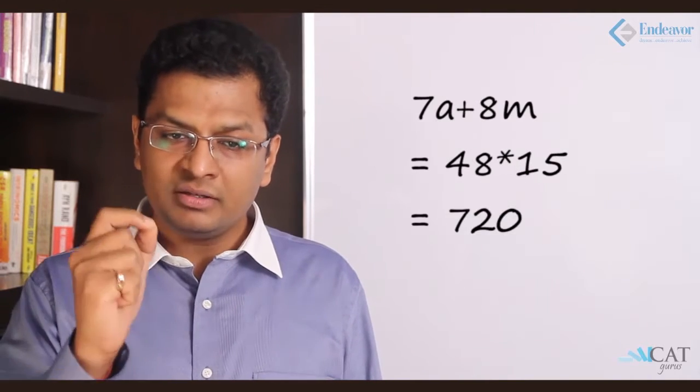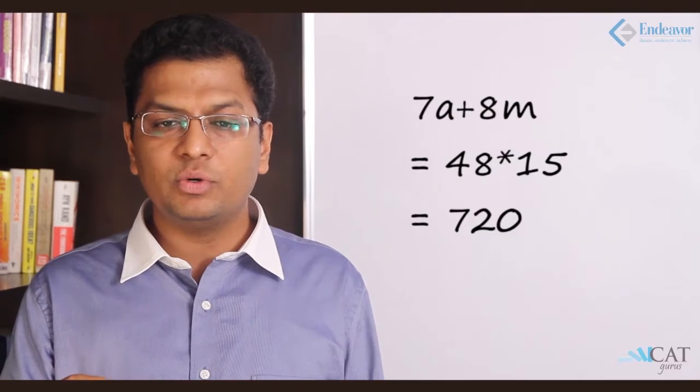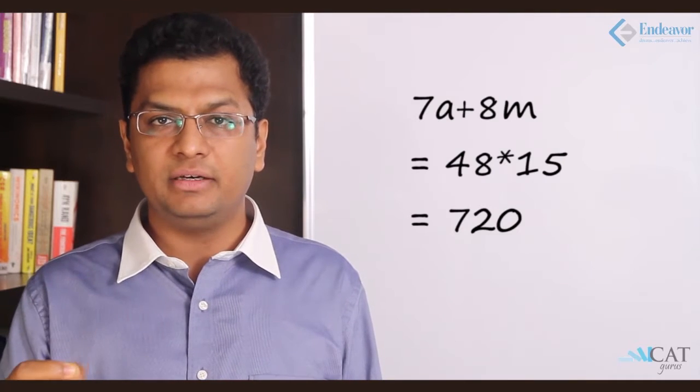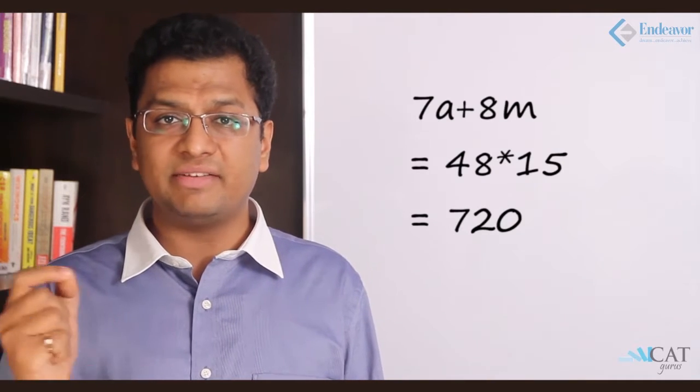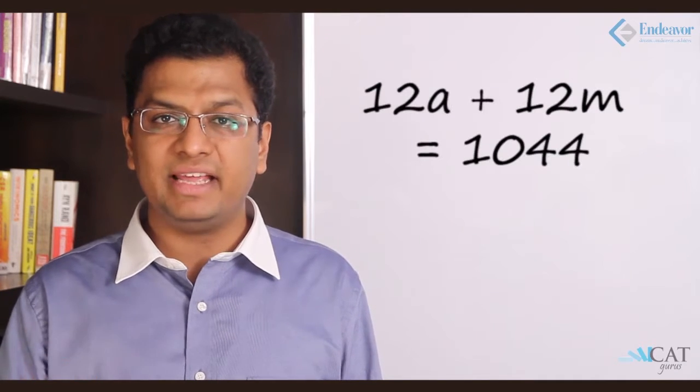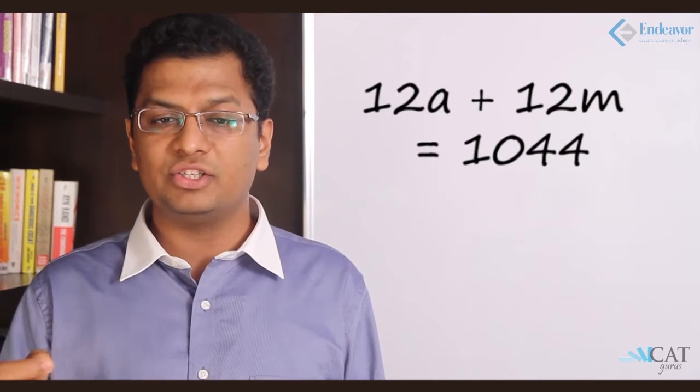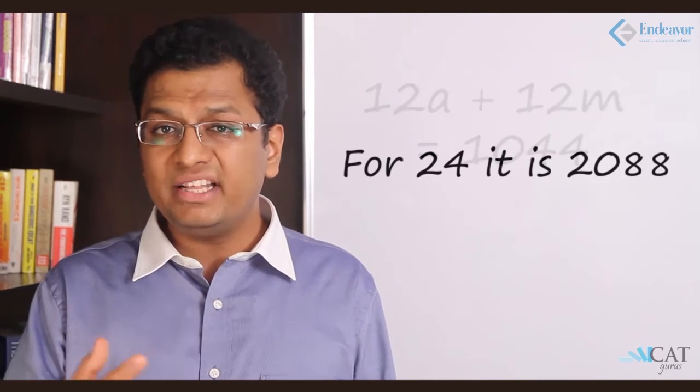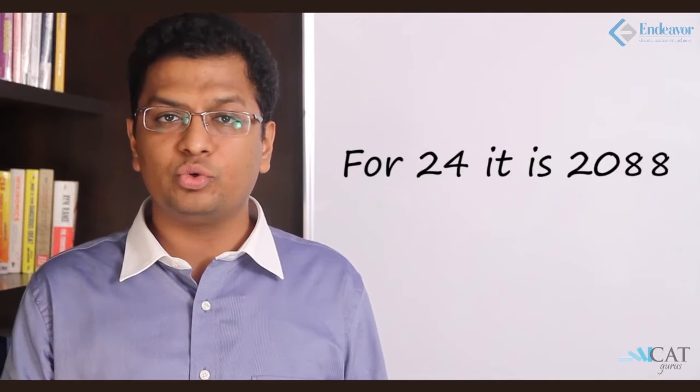The second one: 7a plus 8m equals 48 into 15, which is 720. Now when we calculate both of them, it will be nothing but 12a plus 12m equals 1044. So for 24, it will be nothing but double, so 2088.